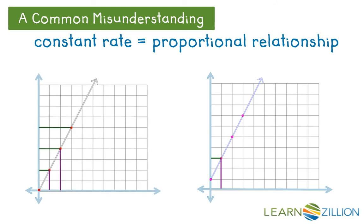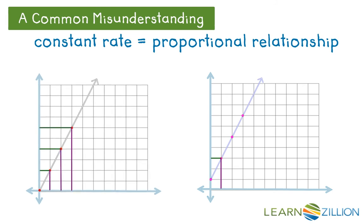For all three points, the x values are multiplied by two to get the y value, so there's a constant relationship — always times two. This graph does show a proportional relationship. On the graph on the right, from the first point you might think the relationship is times three, but the other two points do not use that same multiplicative relationship. The second point is times two and a half to get five, and the third point where x equals three is times two and a third to get seven. So we are not seeing times three every time — every time you're multiplying x by a different value to get y. This shows there is not a proportional relationship.